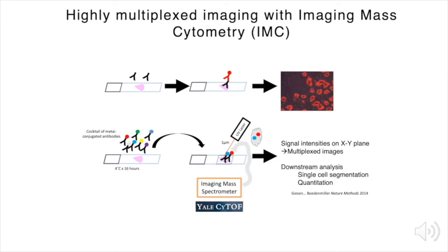Data can be reconstructed into highly multiplexed images, which can be false-colored and quantitatively analyzed. The advantages of this approach are that you can assess dozens of markers at once without exhausting a scarce tissue sample, and that, because the data are all acquired in a single acquisition, you can readily perform quantitative analysis, as I'll show you.